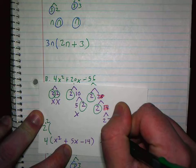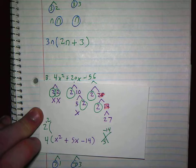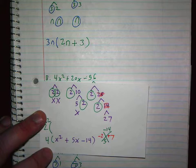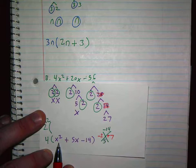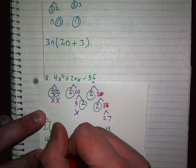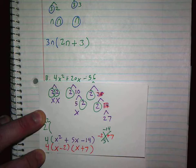Are there two numbers that multiply to negative 14 that add to 5? Negative 2, positive 7. Absolutely. So negative 2, positive 7. So I would break this up into X because it's X squared. X minus 2. X plus 7. And I would put the 4 out front, right?